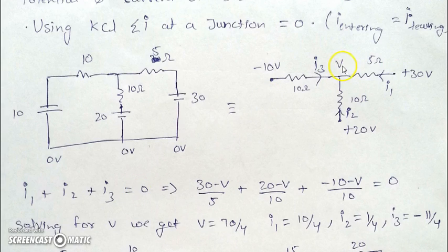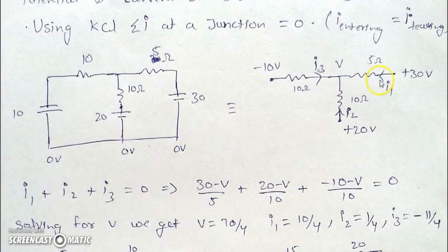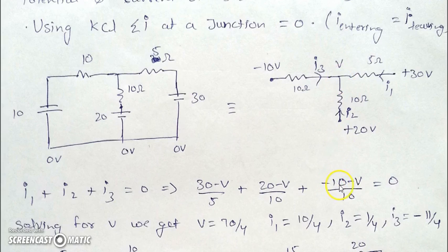Since V is smaller than all three potentials (−10, +30, and +20), we write the currents using potential difference over resistance. For I1: (30 − V) / 5. For I2: (20 − V) / 10. For I3: (−10 − V) / 10 — this point is slightly tricky. We assume V to be even less than −10, so minus 10 minus V divided by 10 gives us I3. Setting the sum of these three currents equal to zero, we solve for V.